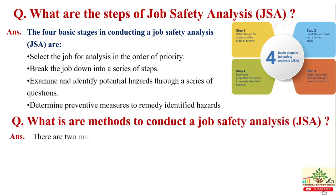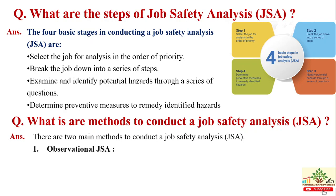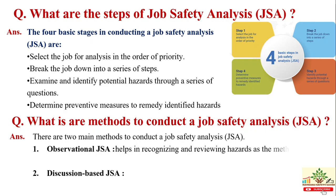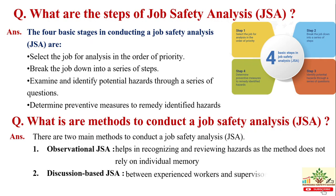There are two main methods to conduct a job safety analysis. Method 1: Observational JSA — helps in reviewing charts and records rather than relying on individual memory. Method 2: Discussion-based JSA — involves discussion between experienced workers and supervisors, which improves the chance of workers accepting new work procedures.